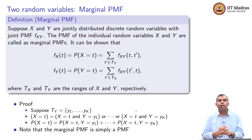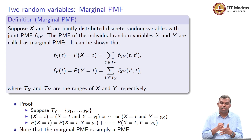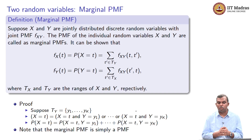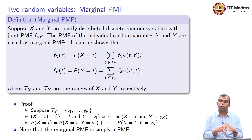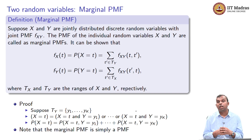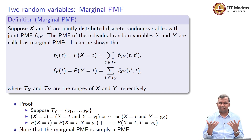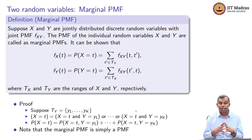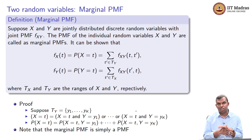Somebody gives you the table. How do you go from there to thinking of X as an individual random variable? X is a random variable on its own — each of them have their own PMFs. Those kinds of PMFs, when you have joint distributions, are called marginal PMFs.